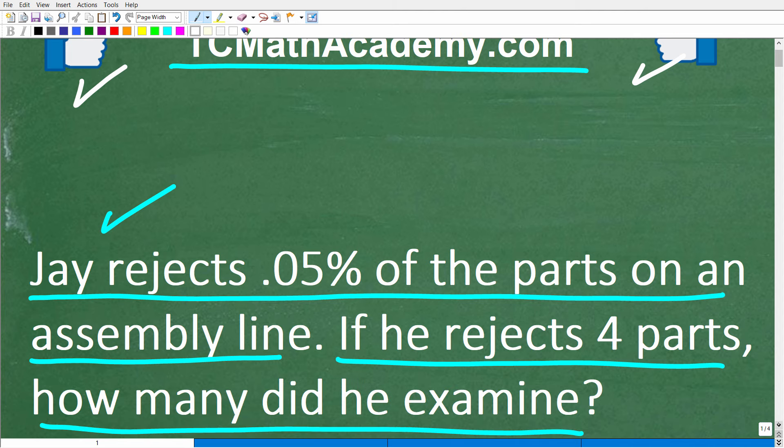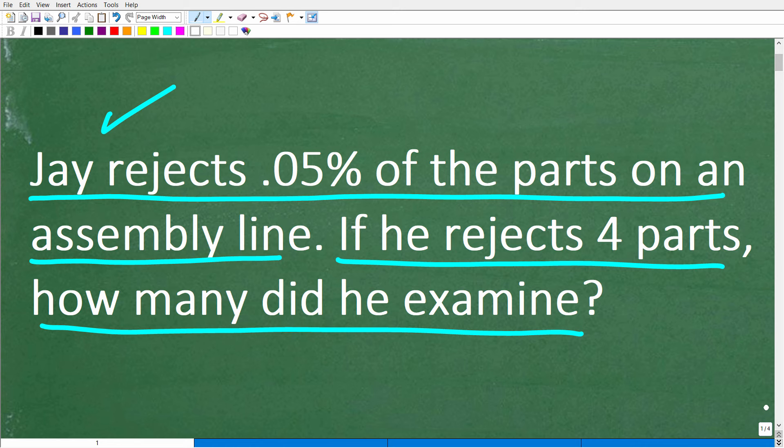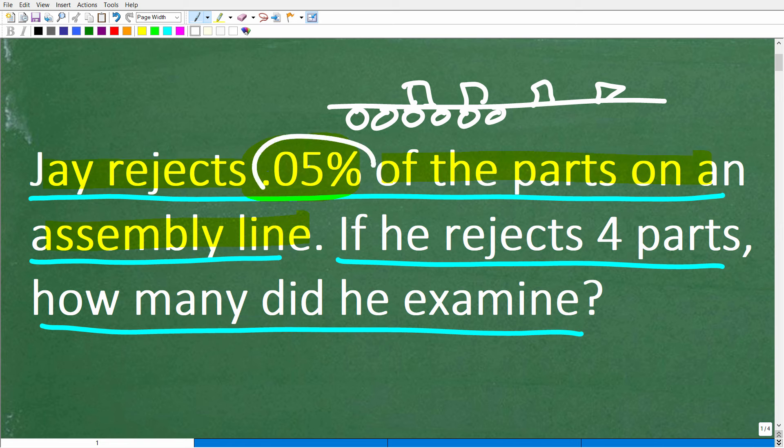Okay, so let's take one more look at the question before I show you the answer. Jay rejects 0.05% of the parts on an assembly line. Just in case you don't know, an assembly line is some sort of belt with rollers with parts going by. Here is Jay looking at these parts, and he rejects 0.05% of the parts going past him. If he rejects 4 parts, how many total parts did he examine?